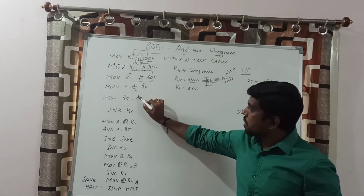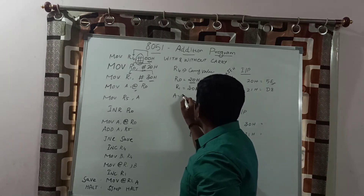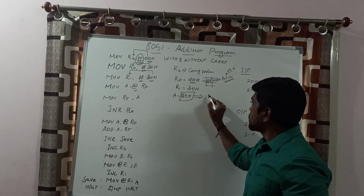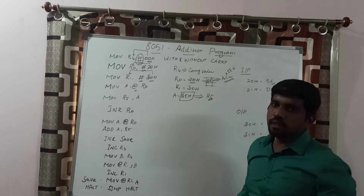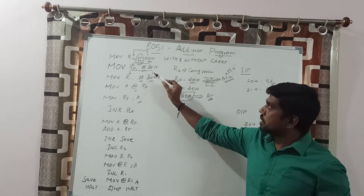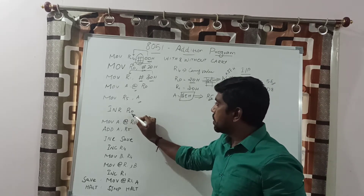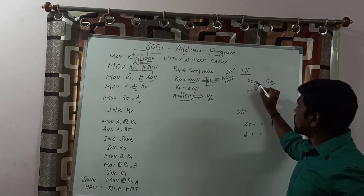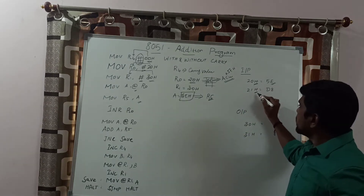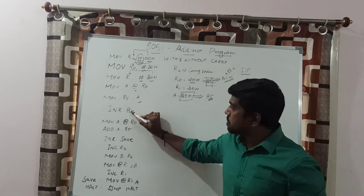The next instruction is MOV R5, A — whatever value is present in the accumulator, that content is transferred to R5 register. Accumulator content is 5EH, so after execution this content is moved to R5. The next instruction is INC R0 — before execution, R0 value is 20H. After incrementing, R0 register content becomes 21H. This 21H is the next memory location address stored in R0.